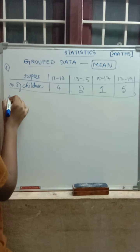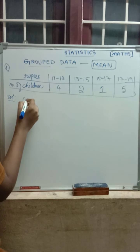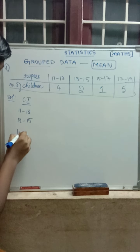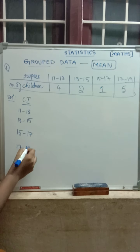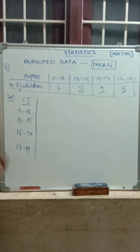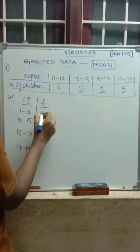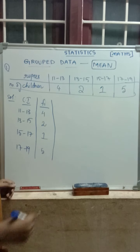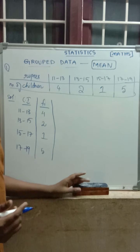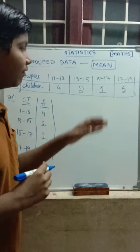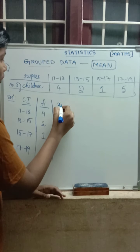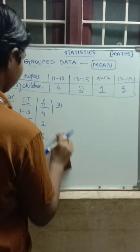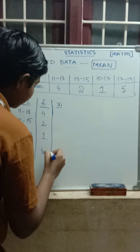Now we have to write the tabular form. The columns are: class intervals (rupees), frequency Fi, and Xi. The class intervals are 11–13, 13–15, 15–17, and 17–19. The frequencies are 5, 4, 2, 1, and last 5. Since we need to find Di, we also need Fi·Di. The formula for Di is Xi minus A, so first we need Xi. Xi equals upper limit plus lower limit divided by 2.